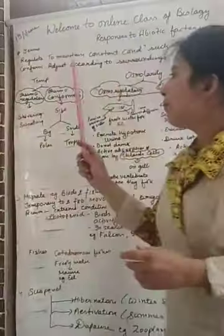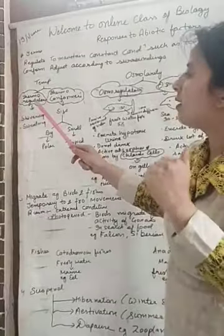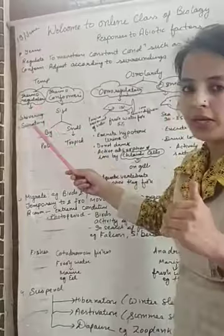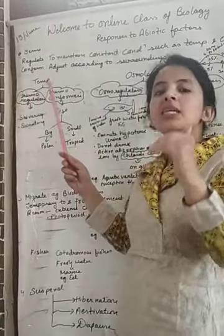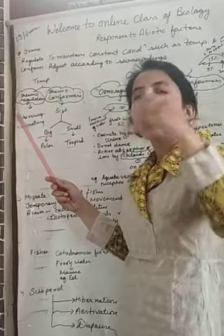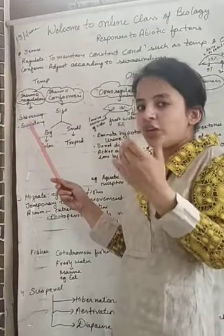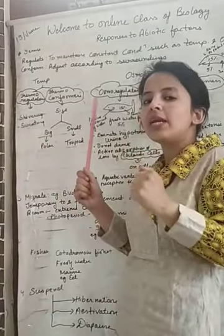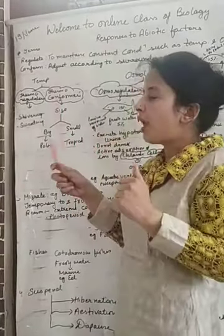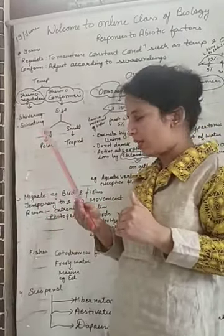Second is temperature. Organisms are also divided into thermoregulators and thermoconformers. In thermoregulators, as I mentioned, the organism maintains a constant temperature. When outside conditions are cold, our body will shiver to maintain constant temperature. When outside conditions are hot, our body will sweat in order to maintain constant temperature.